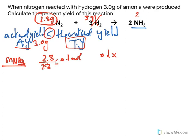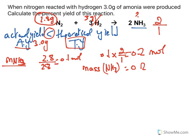So multiplied by 2 over 1 equals 0.2 mole. Now mass of ammonia formed is 0.2 multiplied by 17, which is 3.4 grams.